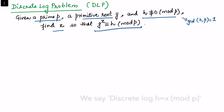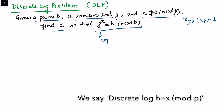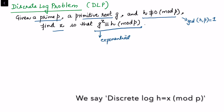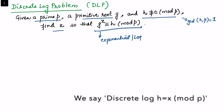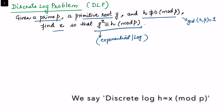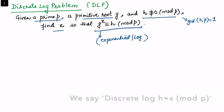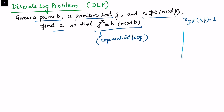In the formal definition, the discrete log problem is defined as: given a prime p, a primitive root g, and h where gcd(h, p) = 1 (because p is prime, p does not divide h), find x such that g^x ≡ h (mod p). This is equivalent to the exponential problem, which is why we call it the discrete log problem. The index of an integer is the same as the discrete log of that integer.